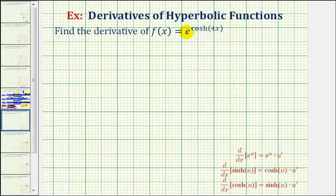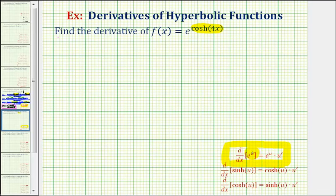The outer function will be the exponential function, and the inner function will be the exponent, which is the hyperbolic cosine function. Looking at our derivative formulas, we'll apply this formula here, which includes the chain rule, where u is equal to the inner function. The derivative with respect to x is equal to a product where the first factor is the derivative of the outer function, and the second factor, u prime, is the derivative of the inner function.